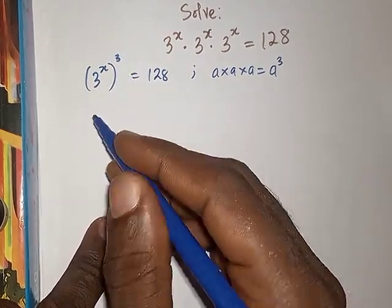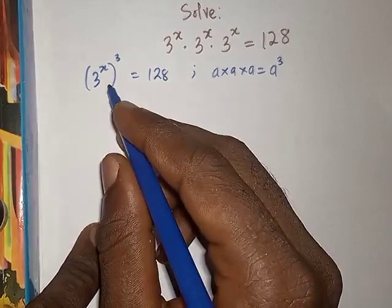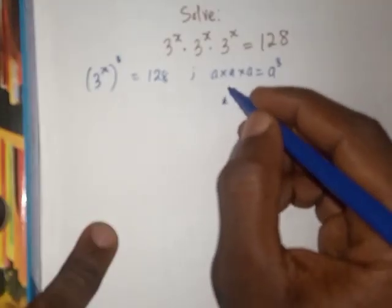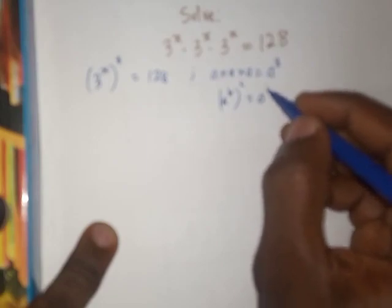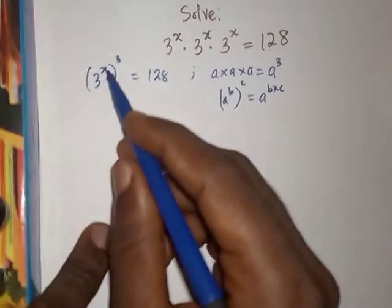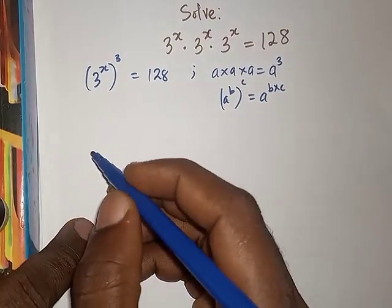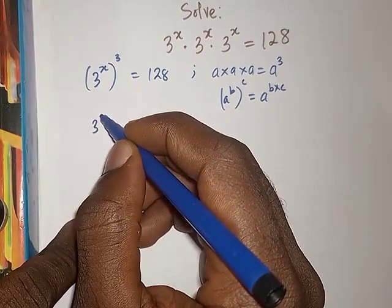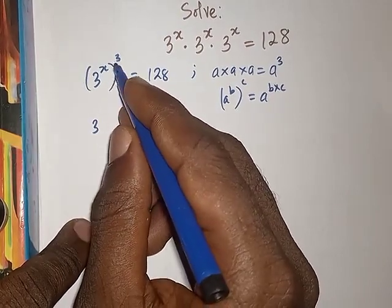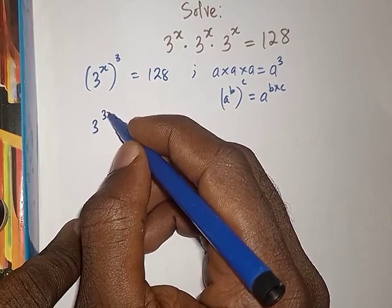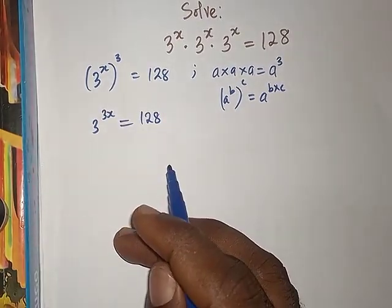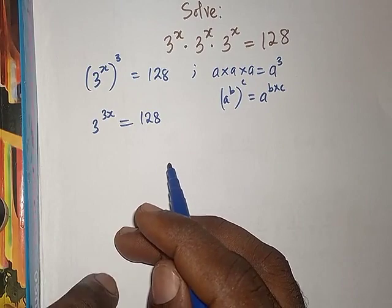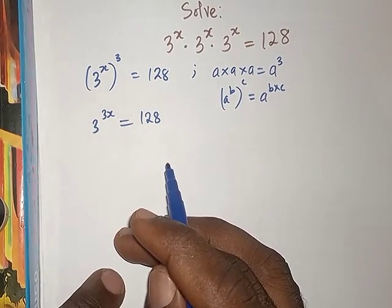Now from there, whenever you have something like a to power b then to power c, this will be a to power b times c. We are going to do that here. Therefore we are going to have 3 to power x, we multiply by 3, we are going to have 3x equals 128. Are you following? Now from there we can move further.